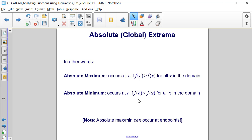An absolute minimum occurs at C if f of C is less than f of x for all x within the domain. It's also worth noting that absolute maximum and minimum values can occur at endpoints.